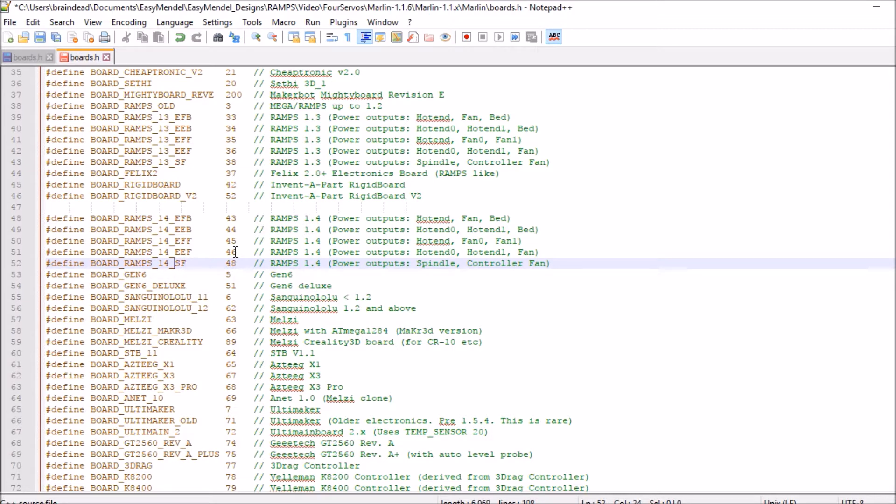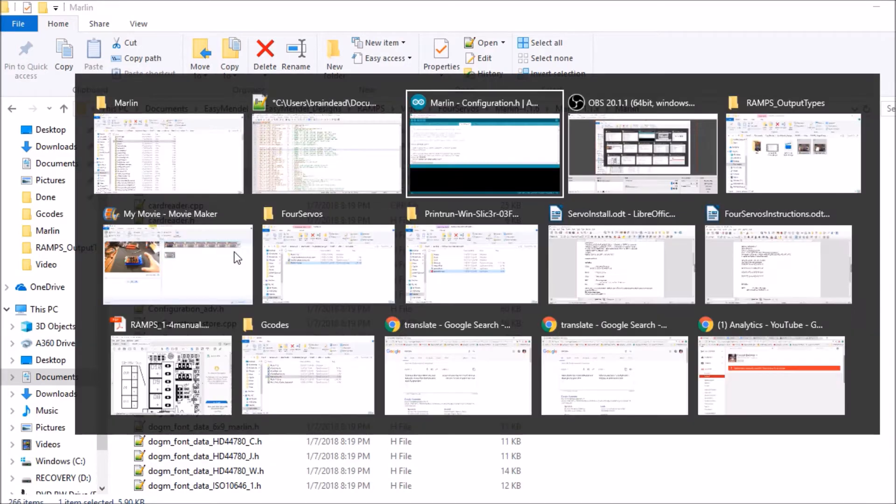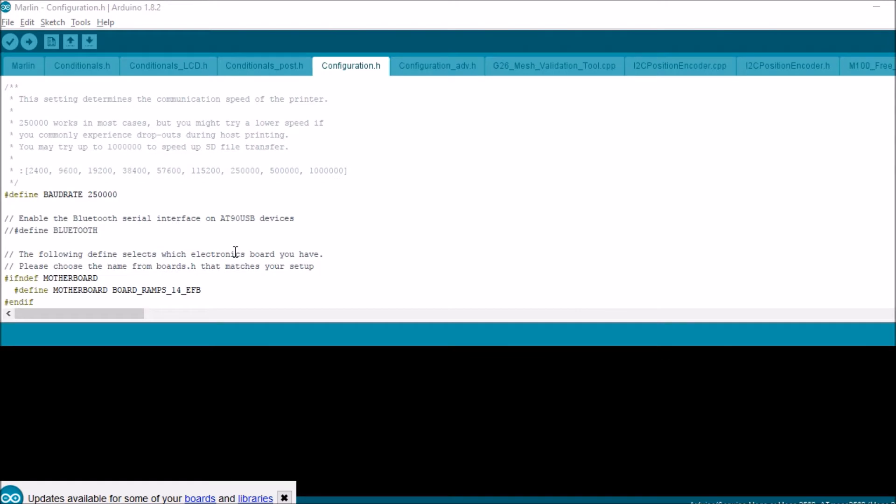Let me show you what it looks like to do the next four configurations real quick here. The first one we're going to do is hotend 0, hotend 1, and bed. So if we're in Marlin, all we have to do on configuration.h is extruder, extruder, bed for EEB.